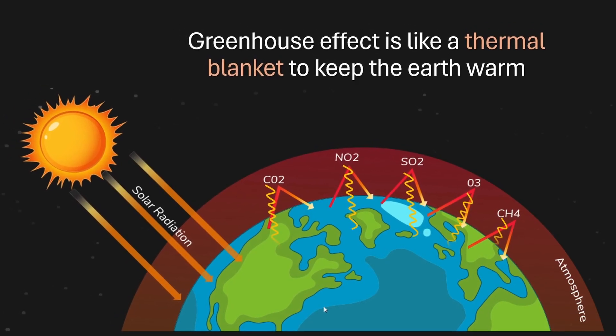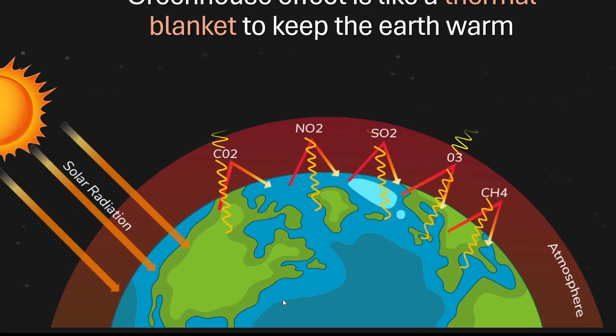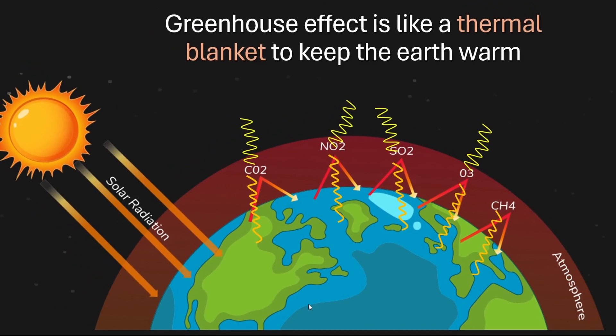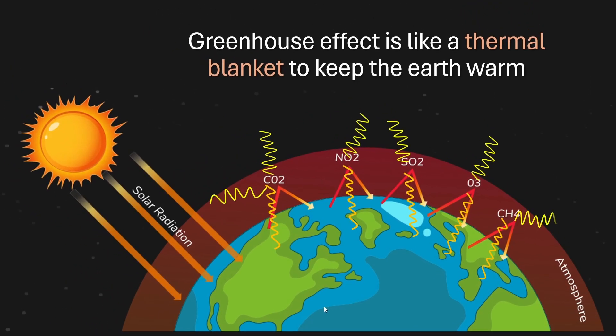Without these greenhouse gases, the temperature of the earth would be very low, especially at night. They keep the earth warm by trapping some of the heat that the sun radiates to the earth's atmosphere. This phenomenon of greenhouse effect is very essential for life on earth.